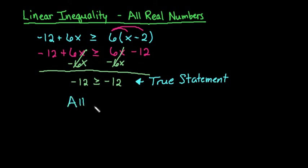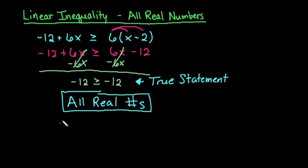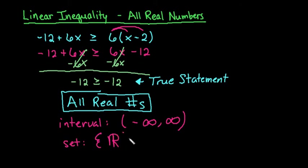So all real numbers would be the solution set to this. Depending upon the class that you're in, sometimes just writing all real numbers is acceptable. If you're using interval notation, you would write it as negative infinity to positive infinity. And if you wrote it in set notation, you would just say that it's the set of numbers. And they use the symbol for reals. All reals is an R with an extra line in it. So this would be the set of all real numbers.